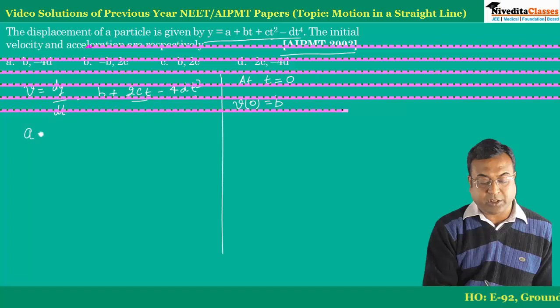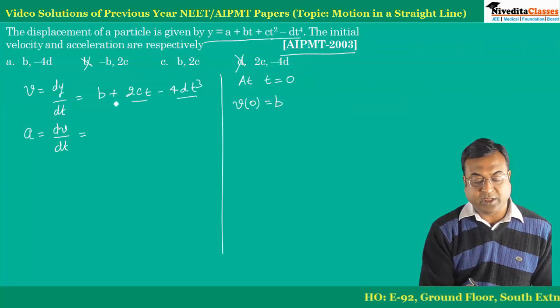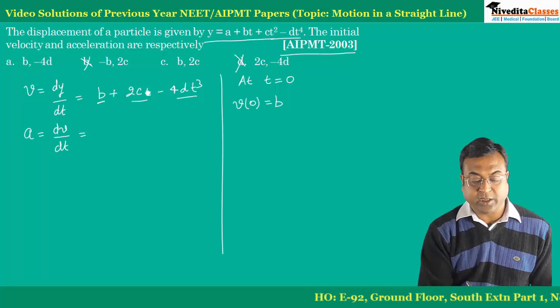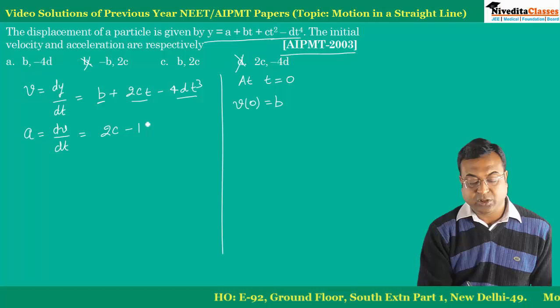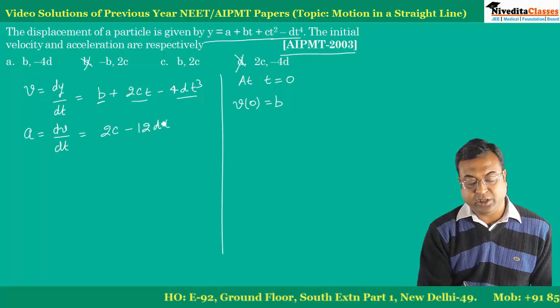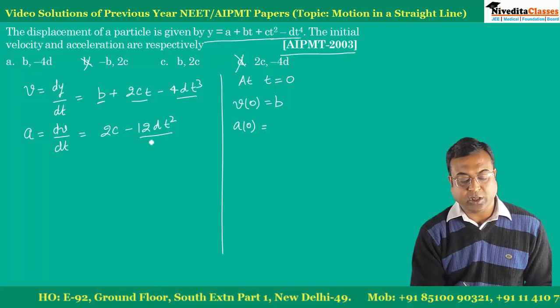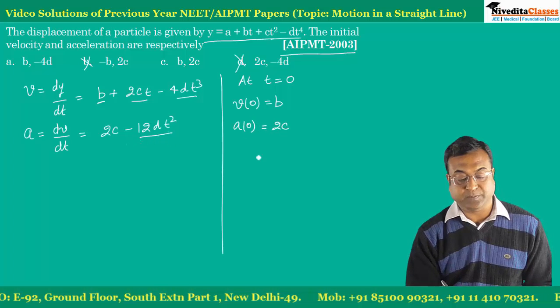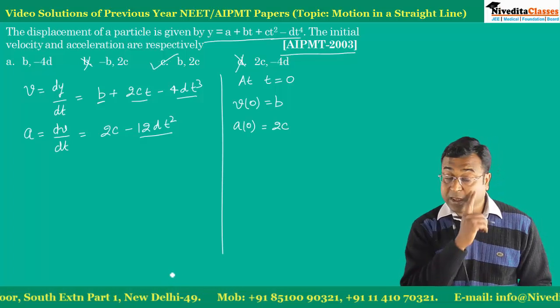Now let's talk about acceleration. Acceleration is dv by dt. So we'll take its derivative. Derivative of b is zero. Its derivative is 2c minus 12dt square. We'll calculate acceleration at time zero. Then this becomes zero. How much remains? 2c. So my option c becomes the correct option. Clear?